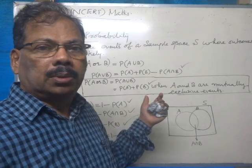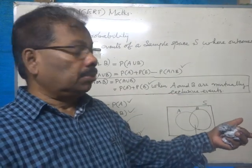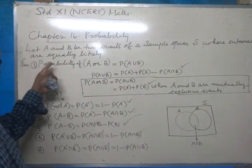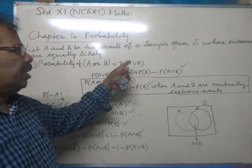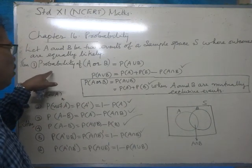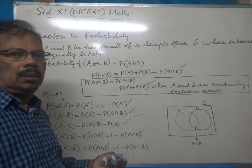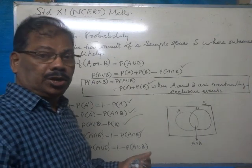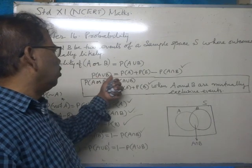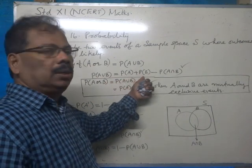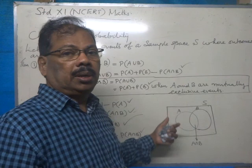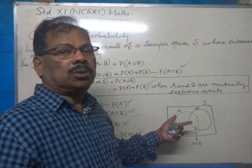A few more points to be remembered for solving the problems given in your NCERT text. Let A and B be two events of a sample space S where the outcomes are equally likely. Point one: probability of A union B is equal to probability of A plus probability of B minus probability of A intersection B. This is true when A and B are not mutually exclusive.